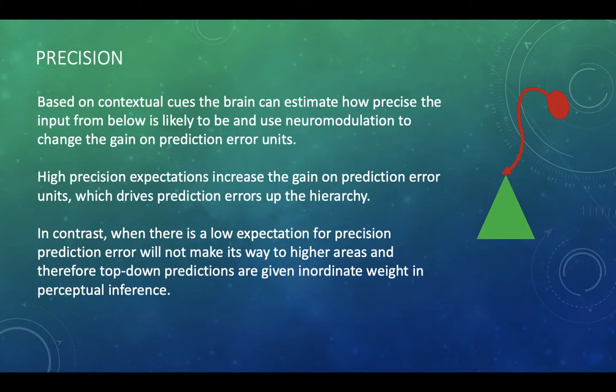Okay. So there's something else that needs to be commented on. It's really important that in the environment, the signal noise ratio changes all the time. So sometimes there's a sensory input that's noisy and uncertain, such as when you're in low light conditions or busy pubs or bustling restaurants with different smells and sounds and everything's going on. Based on contextual cues, the brain can actually, or within the predictive processing theory, it can make estimates about how precise the input is likely to be and use neuromodulation to change the gain on prediction error units. So the brain can have a guess at how precise the signal is going to be, and then modulate how much gain to put on the prediction error units.